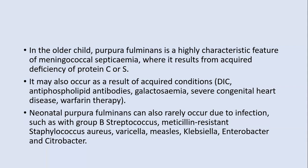Neonatal purpura fulminans can also rarely occur due to infections such as group B streptococcus, methicillin-resistant Staphylococcus aureus, varicella, measles, Klebsiella, Enterobacter, and Citrobacter. In addition to deficiency of protein C and S, infections, congenital heart disease, warfarin, and antiphospholipid syndrome are also causes.